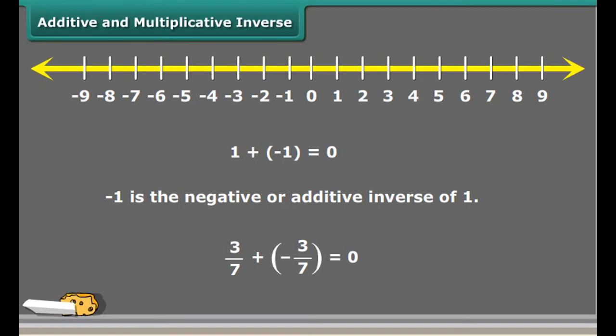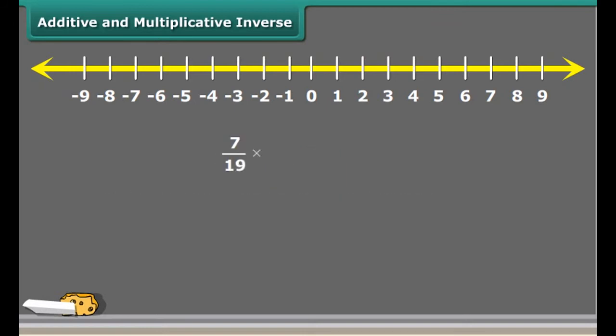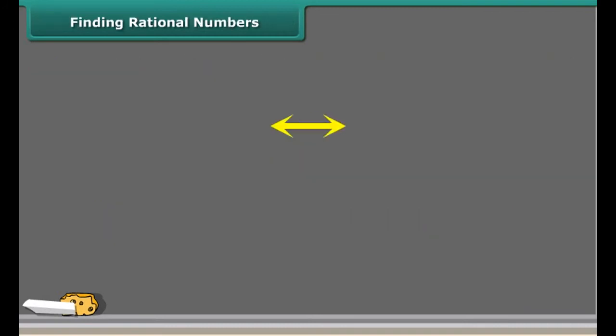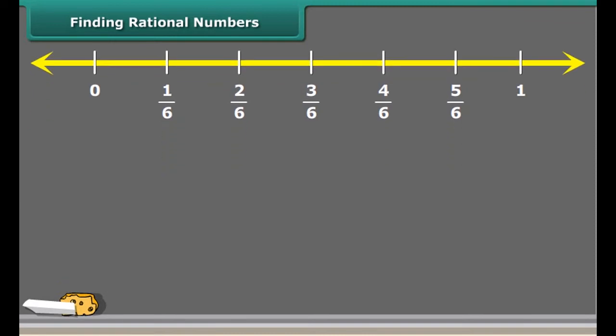You may have come across negative numbers while studying, isn't it? Is minus 1 the negative of 1? Yes. It is because 1 plus minus 1 equal to 0. So we say that minus 1 is the negative or additive inverse of 1. Likewise, for any rational number, say 3 by 7, minus 3 by 7 will be its additive inverse.